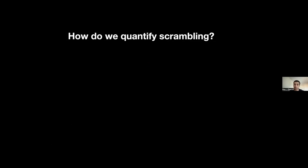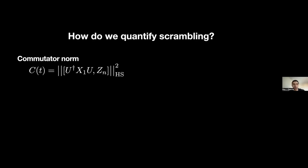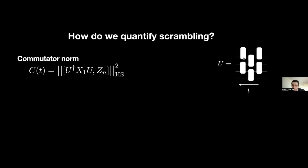We've given a characterization of what scrambling unitaries do. The next question is how can you quantify the scrambling behavior — can you write down some function? Traditionally, people describe scrambling using a function called the commutator norm. This function is meant to give you a signature of operator spreading behavior. Here we have a commutator between some local Pauli Z operator and some time-evolved Pauli X operator, and we take the unitary doing the evolution to have this brick layer structure, where t is the time parameter.